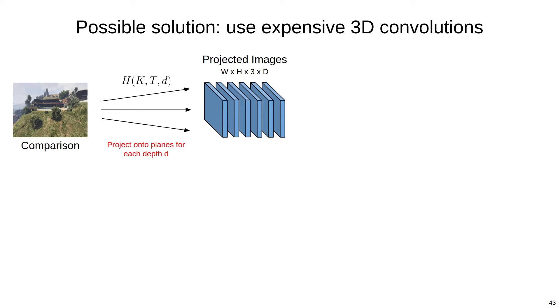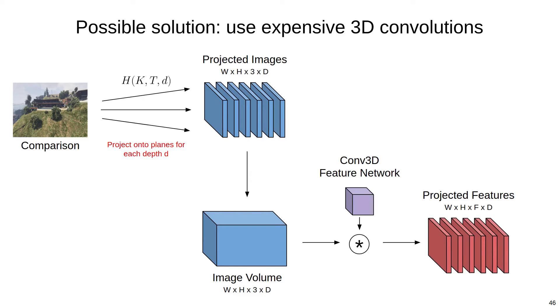Another option is to concatenate the projected images into a volume and then extract features from this volume directly using 3D convolutions. So we take all of our projected images, concatenate them into a volume, and then apply one or more 3D convolutions to extract features. This is a fairly flexible approach, but we'd like to avoid 3D convolutions because they're much more expensive than their 2D counterparts.